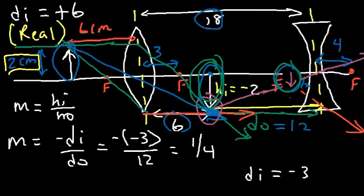A divergent lens always produces a virtual image that's reduced and upright. A convergent lens can produce a real image if the object is beyond the focal point. If the object is placed between the focal point and the convergent lens, then it produces a virtual image that is upright and enlarged, forming on the left side of the convergent lens. Those are some key things to know, and that's it for this video. Thanks for watching and have a great day.